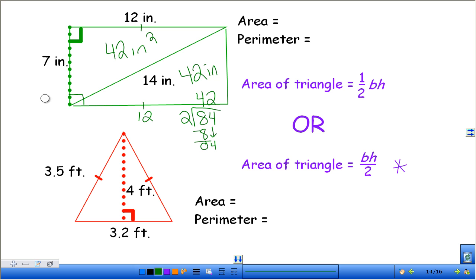Help me out. 2 goes into 8? 4 times. Bring it down to 4. How many times does 2 go into 4? 2. So this whole thing is 84 inches squared. This triangle over here is 42 inches squared. And this triangle over here is 42 inches squared. So the area of this beginning triangle is 42 inches squared.